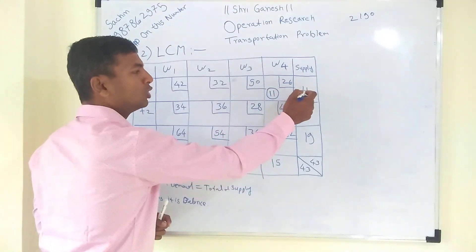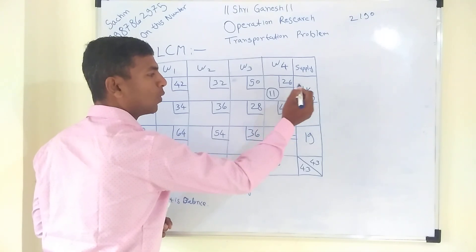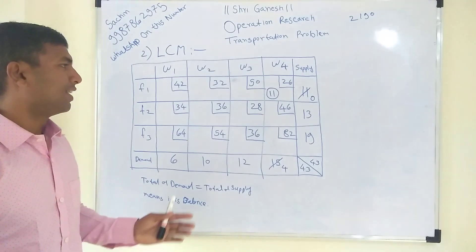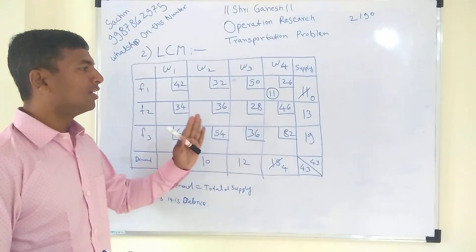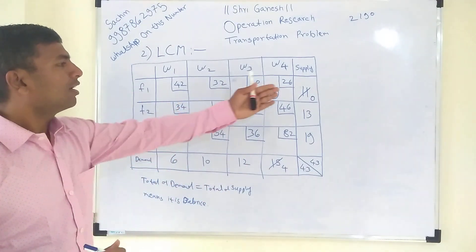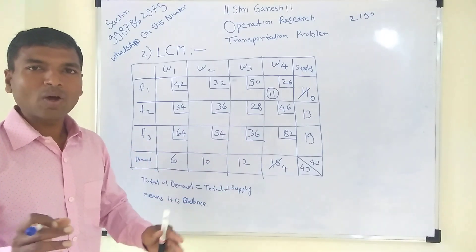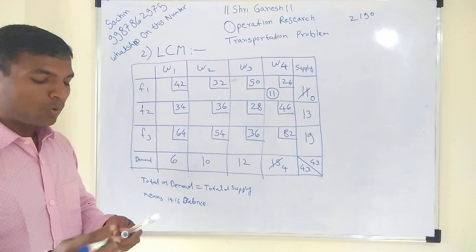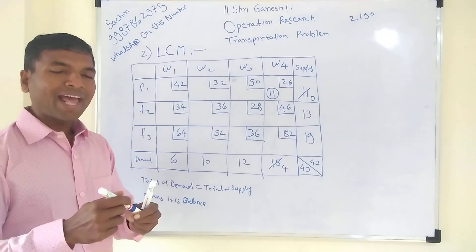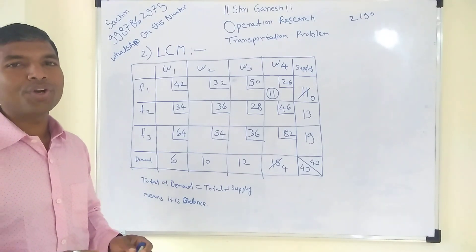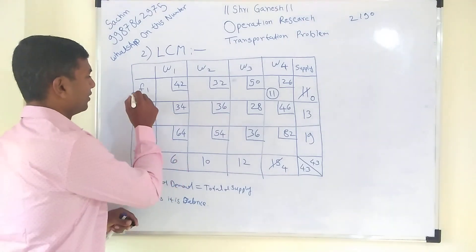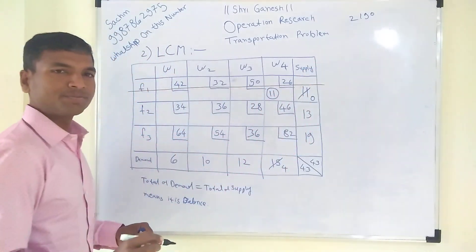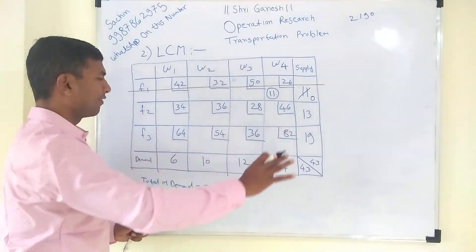After allocating 11, subtract that allocation from the supply and demand: 11 − 11 = 0, and 15 − 11 = 4. Factory 1 now has zero supply, so it cannot supply anything more. We cancel Factory 1 — it is no longer considered in future operations.